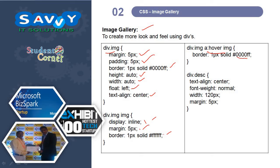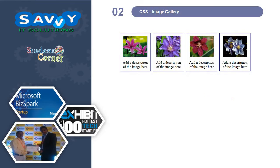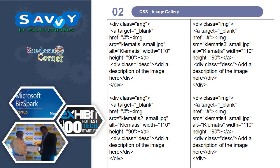For div.description, text-align is center, font-weight is normal, width is 120px, and margin is 5px. Let me show you the output first. This is the first outer layer, this is the inner layer, this is the text description, this is the inner image, and this is the outer layer. The gap represents cell spacing and cell padding. Now coming to the HTML part — div class is equal to image, so the class name is image.